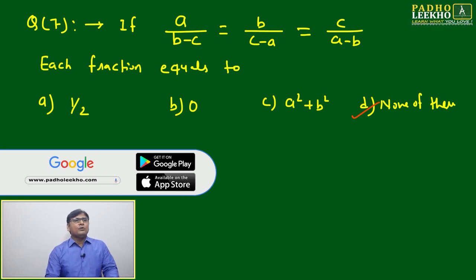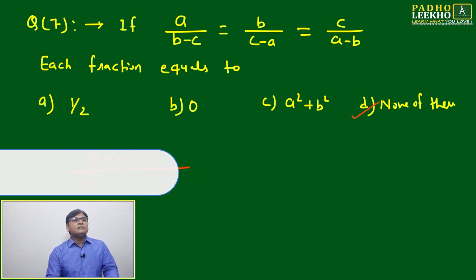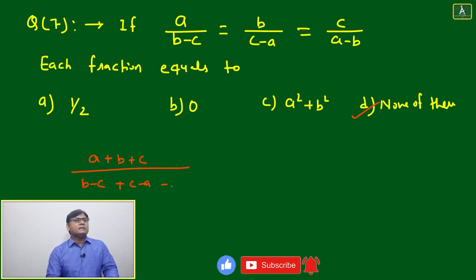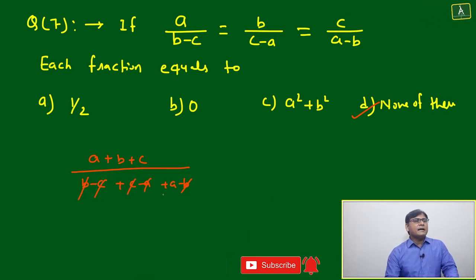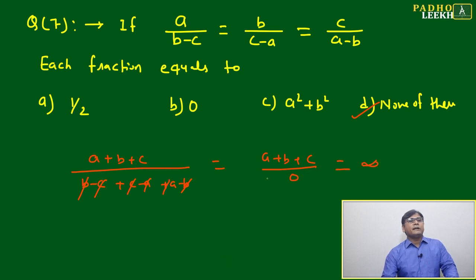Just look, because every proportion will be equal to just sum of all the numerators. We have seen a + b - c + c - a + a - b. What will happen? This will be cancelled out, then it will become zero. Means a + b + c will be zero, it will be undefined. Means we can say 'none of these'. Just in place of b - c, c - a, and a - b.